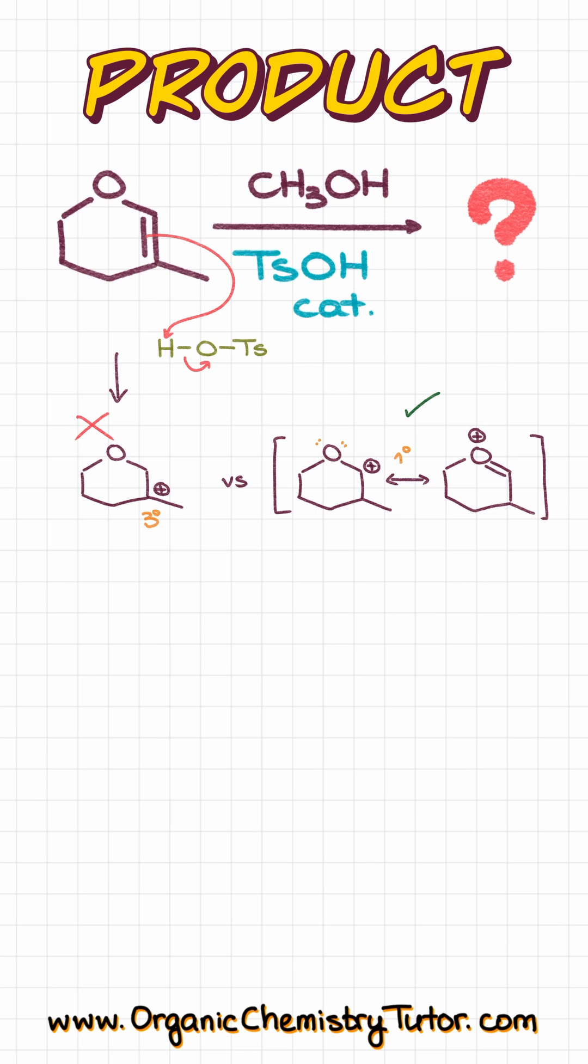Once we know which carbocation we are going to be using in this case, we are going to bring our methanol, which is going to serve as our nucleophile, to attack our electrophilic position, which is our carbocation. We can show it with a minor resonance contributor, or if you like, you could also show it with a major resonance contributor, like so.